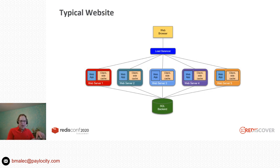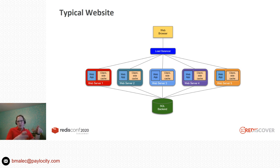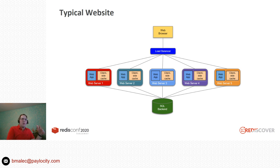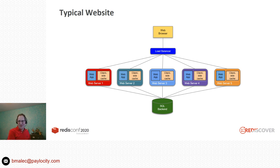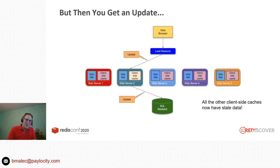We have a fairly typical website: we've got several web servers behind a load balancer, all driven by a SQL back-end. Beyond the SQL back-end, we also end up putting a bunch of client-side in-memory caches on all the web servers. The reason we do this is there's lots of data that we display quite a bit that doesn't change often, and we really don't want to make the trip and throw the load on SQL to pull back these values over and over again. This is a pretty common scenario.